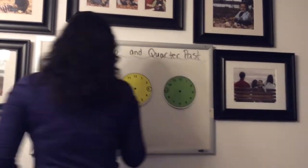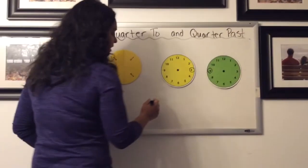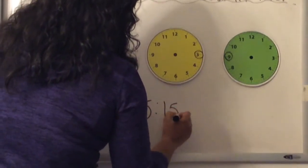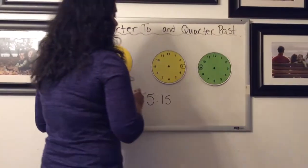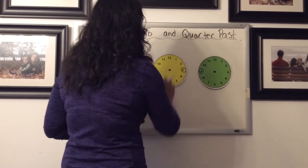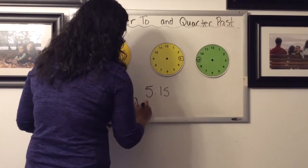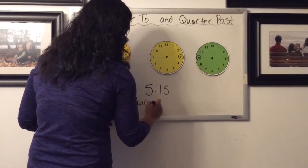If you wanted to find the time 5:15, that would be quarter past five. We know that time as quarter past five.